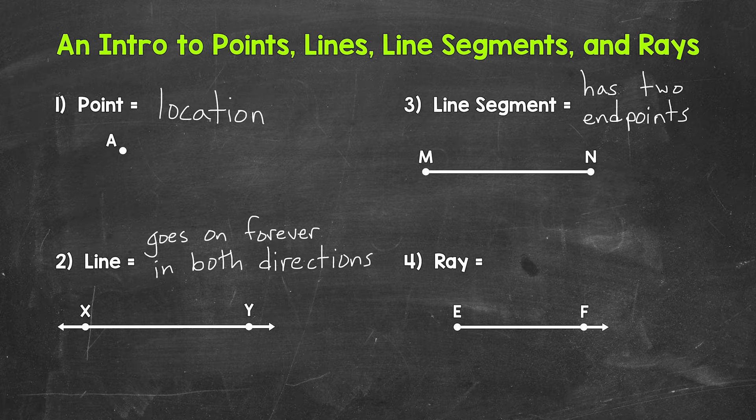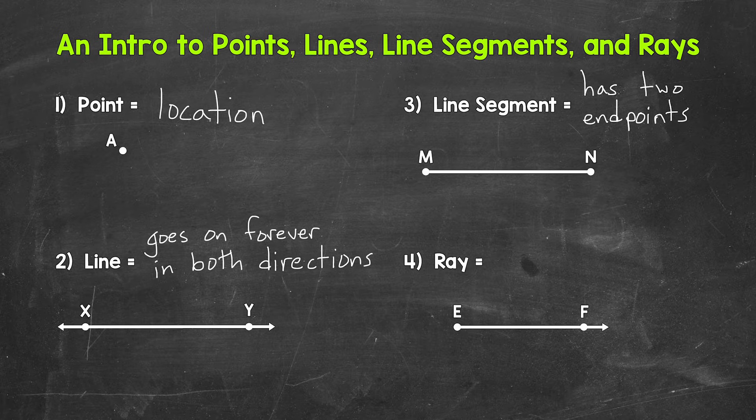For our example, we have line segment MN. That line segment stops at point M and stops at point N—those are the two endpoints. We will go into naming line segments in another section.